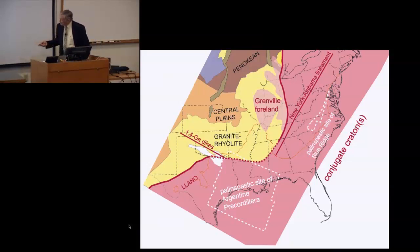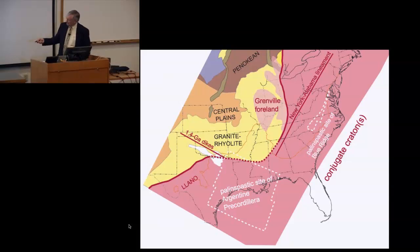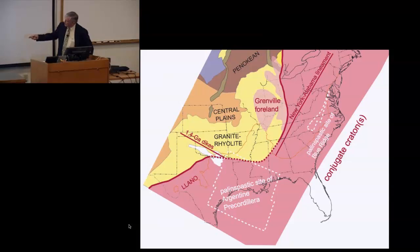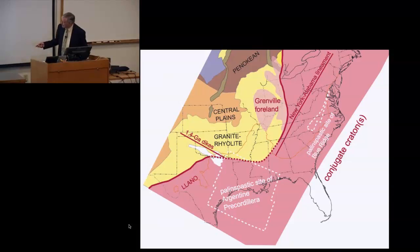Further south, the Llano uplift of Texas, when compared to Grenville age rocks in the Precordillera of Argentina, shows the same general geochemical characteristics, suggesting they were originally close together. The Precordillera of Argentina is now in Argentina, but we interpret it as a fragment of continental crust that originated here in southern Laurentia.